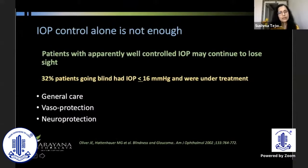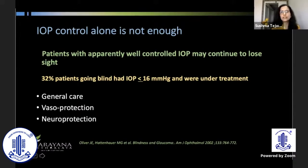But controlling intraocular pressure alone may not be enough, because even with well-controlled intraocular pressure, glaucoma patients may continue to lose sight. Almost 32% of patients going blind had an IOP of less than 16 mmHg in a particular study. So we definitely need to take care of other factors as well, which includes general care of the patient, vasoprotection, and neuroprotection.